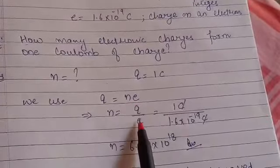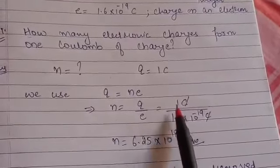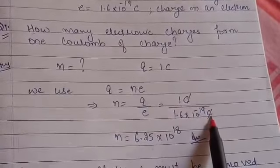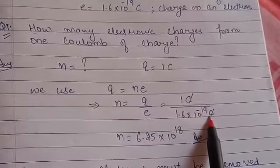So N is equal to Q divided by E. So we will substitute the values. Q is given 1 coulomb and E is 1.6 into 10 raise to power minus 19 coulomb. So coulomb and coulomb will cancel out each other.